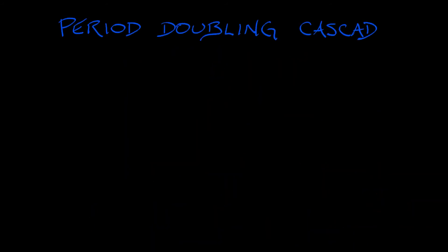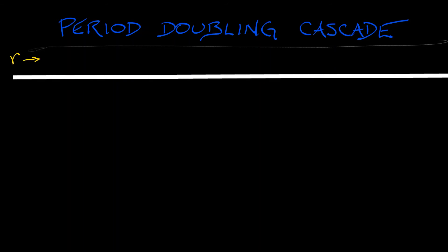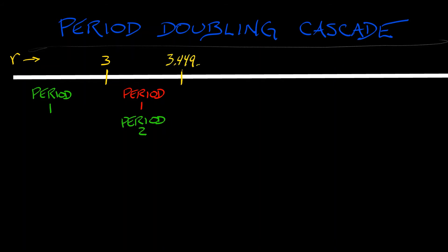That leads to a cascade of period-doublings. When r is less than 3, we have a stable equilibrium — a stable periodic orbit of period 1. Past r equals 3, that stable equilibrium becomes an unstable period-1 orbit, and a stable period-2 orbit is born. Then at r equals 1 plus root 6, approximately 3.449, there is another period-doubling bifurcation. The period-2 orbit becomes unstable, and what gets created is a stable period-4 orbit — that period-doubled orbit itself doubles in period.